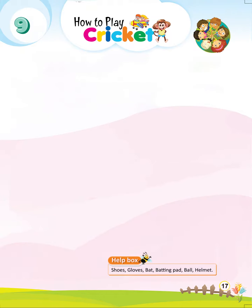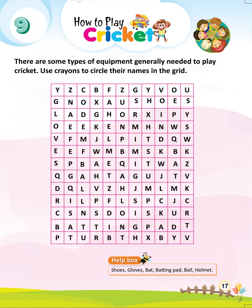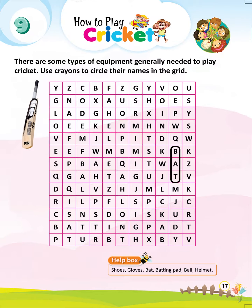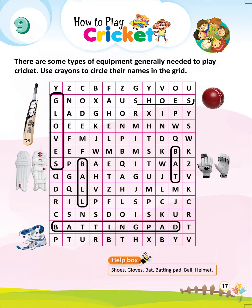Let's start Lesson 9: How to Play Cricket. There are some types of equipment generally needed to play cricket. Use crayons to circle their names in the grid. Help Box: Bat, Ball, Batting Pad, Gloves, Shoes, Helmet.